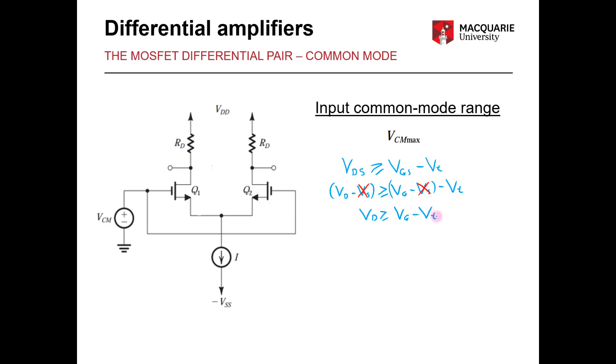Now as we showed in the previous slide we know that the equation for VD is equal to VDD minus the drop across the resistor RD.